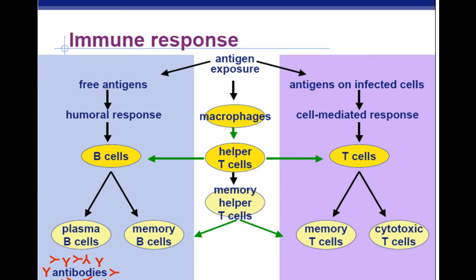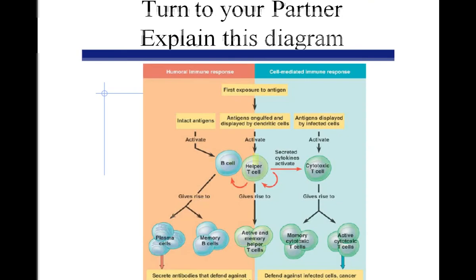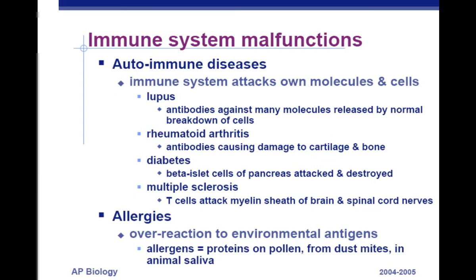Here's a summary table. Antigen exposure via free antigens in the fluid triggers the humoral response: B cells produce plasma cells that make antibodies, and memory cells for later invasions. Macrophages become antigen presenting cells, activate helper T cells, which activate both B cells and T cells. Importantly, HIV attacks helper T cells — that's why it's so devastating; it shuts down the rest of the immune system. T cells activated by helper T cells become memory T cells and cytotoxic T cells, which put holes in invading cells using perforin.